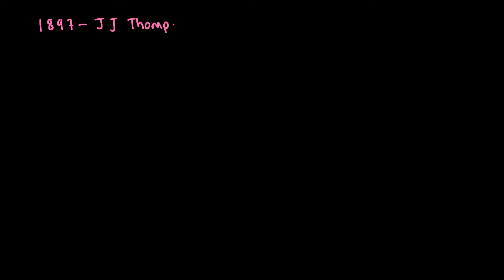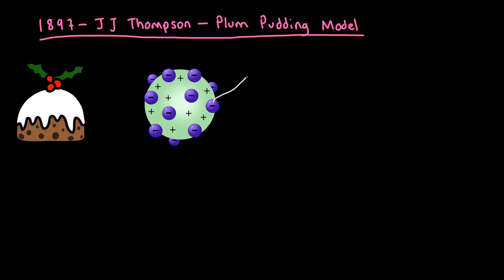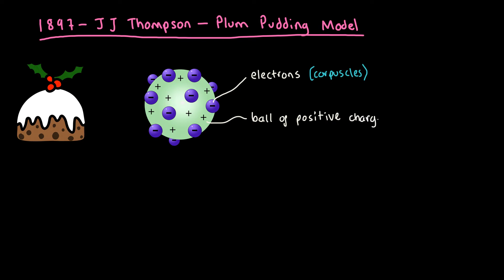In 1897, JJ Thomson proposed a new model of the atom called the Plum Pudding Model. He likened the atom to a plum pudding, where the plums represent the electrons, which he called at the time corpuscles, and the dough, or the rest of the atom, represents a ball of positive charge.